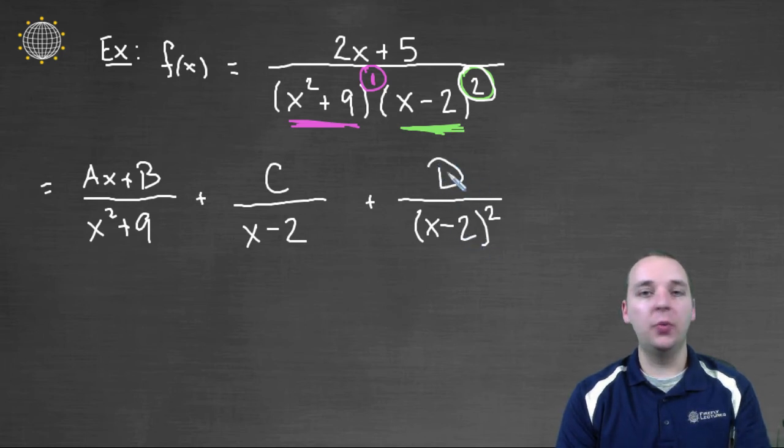This guy's numerator would not be a linear expression because the factor again is linear. Yes, it's repeated, but the factor itself is x minus two. So the numerator would just be a constant. So you just keep tacking on new letters along the way, right?